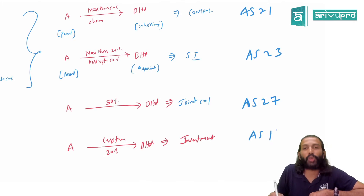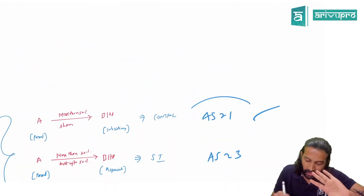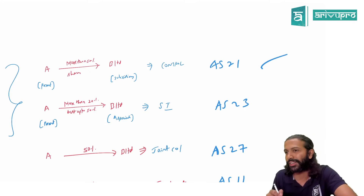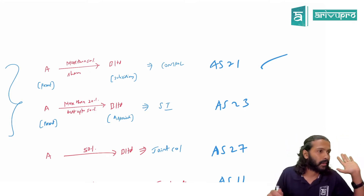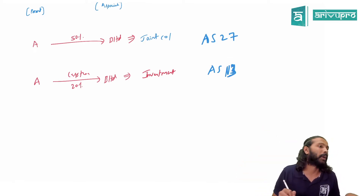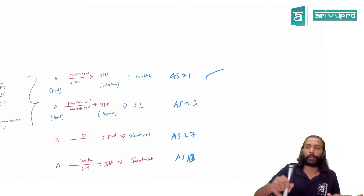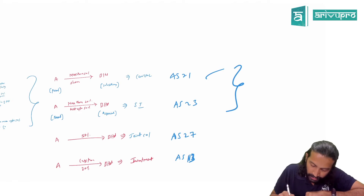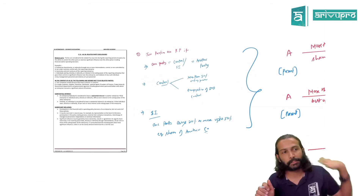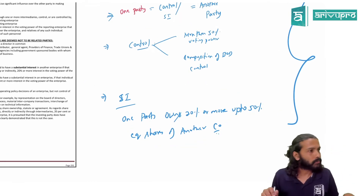These are various standards which deal with the accounting for those relationships. But in your CA Inter syllabus, only the control aspect is there. Joint venture and associate consolidation you will learn in CA Final. AS 13 on investment accounting is in your Group 1 syllabus. So to have a related party, either control or significant influence must exist — meaning at least 20% ownership.